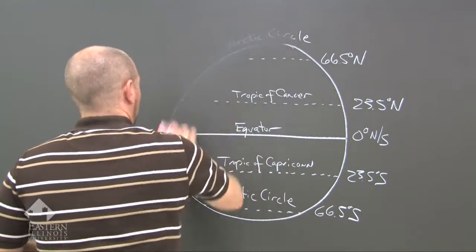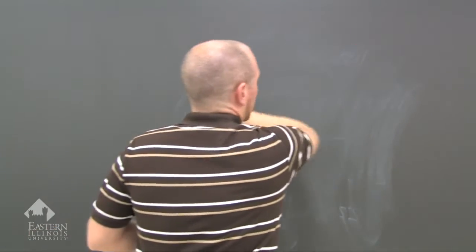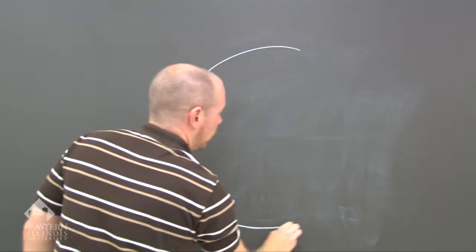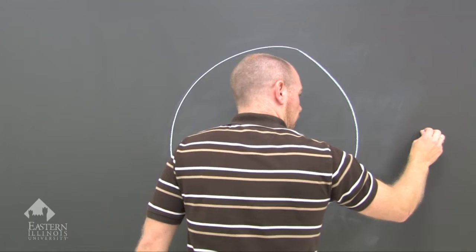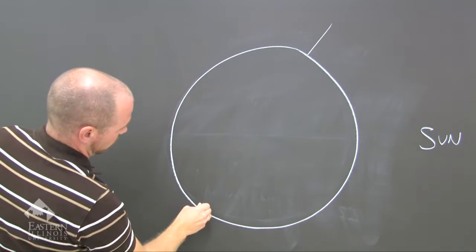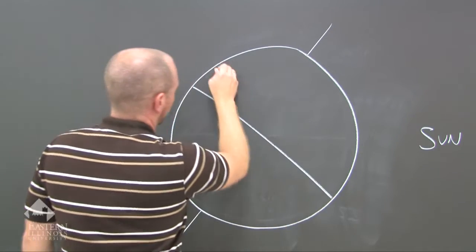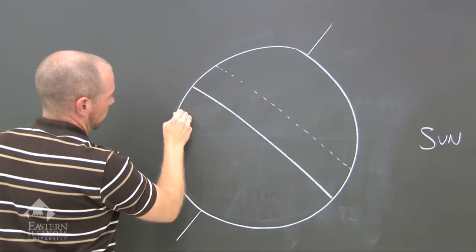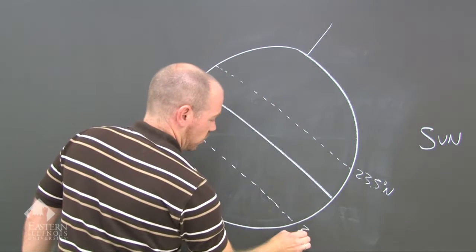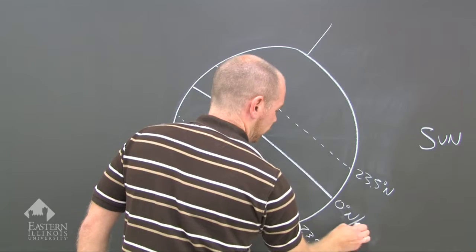Now we're going to talk about these lines more specifically using a cross-section or side view of the Earth, describing the differences in daylight and darkness across the Earth. Go ahead and draw with me — here's the Earth, and the Sun is on this side. Here is the Earth's axis, and we'll draw the equator, the Tropic of Cancer and the Tropic of Capricorn at 23.5 degrees north and 23.5 degrees south.